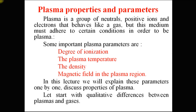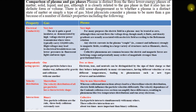We will explain these parameters one by one and discuss properties of plasma. Let's start with qualitative differences between plasmas and gases. In this table, we have shown the characteristic differences between gas and plasma phases. Considering electrical conductivity, gas has very low conductivity, whereas plasma has very high conductivity.